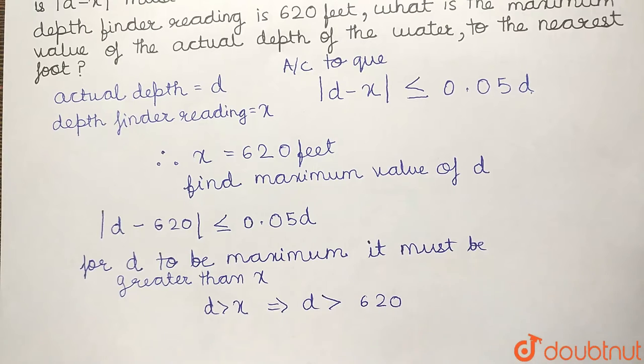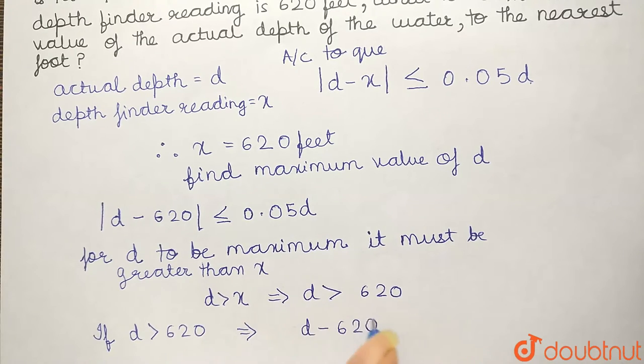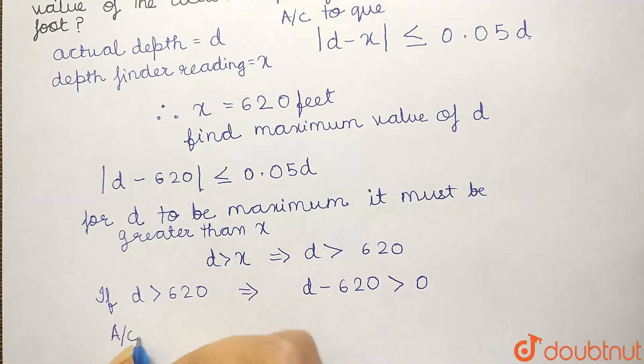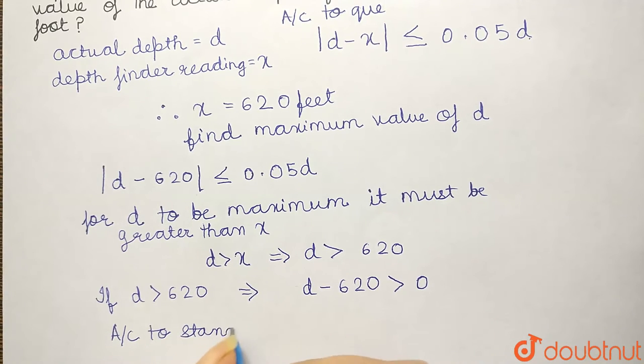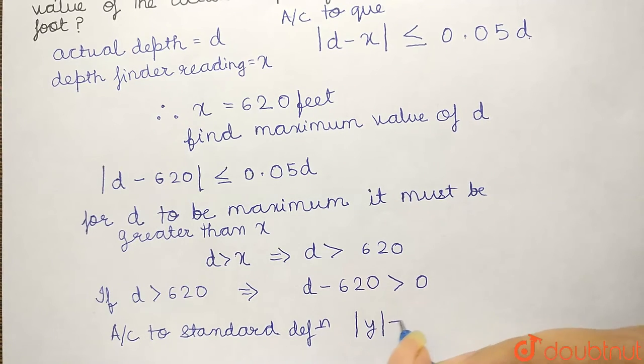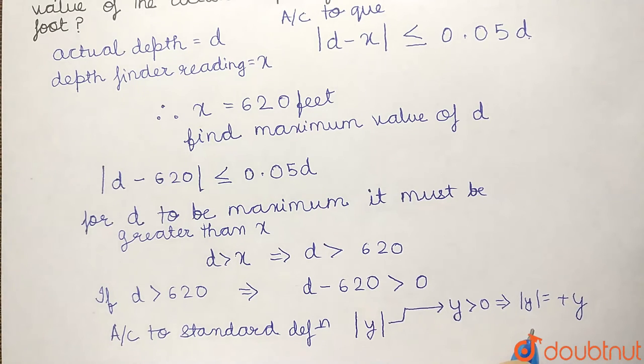So, if D would be greater than 620, this implies that D minus 620 must be something greater than 0. Now, as we know that according to standard definition of modulus, if the entity inside the modulus is greater than 0, then modulus opens with a positive sign. And if the entity inside modulus is less than 0, then it will have to open with a negative sign.